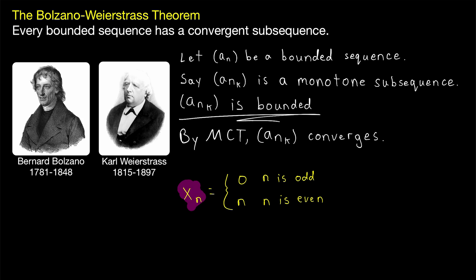Here's an example. X_N is the sequence with a value of 0 for odd N and a value of N for even N. Clearly, the odd terms make a convergent subsequence of 0s, and the even terms will just diverge to infinity. So having a convergent subsequence does not guarantee that a sequence is bounded. But by the Bolzano-Weierstrass theorem, which we just proved, if a sequence is bounded, then it has a convergent subsequence.